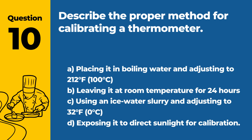Question 10: Describe the proper method for calibrating a thermometer. a. Placing it in boiling water and adjusting to 212°F (100°C). b. Leaving it at room temperature for 24 hours. c. Using an ice water slurry and adjusting to 32°F (0°C). d. Exposing it to direct sunlight for calibration. Answer: c. The proper method for calibrating a thermometer is using an ice water slurry and adjusting it to read 32°F (0°C).